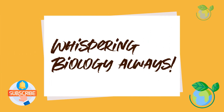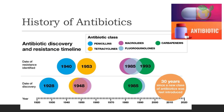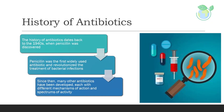The history of antibiotics dates back to the 1940s when penicillin was discovered. Penicillin was the first widely used antibiotic and revolutionized the treatment of bacterial infections. Since then, many other antibiotics have been developed, each with different mechanisms of action and spectrums of activity.